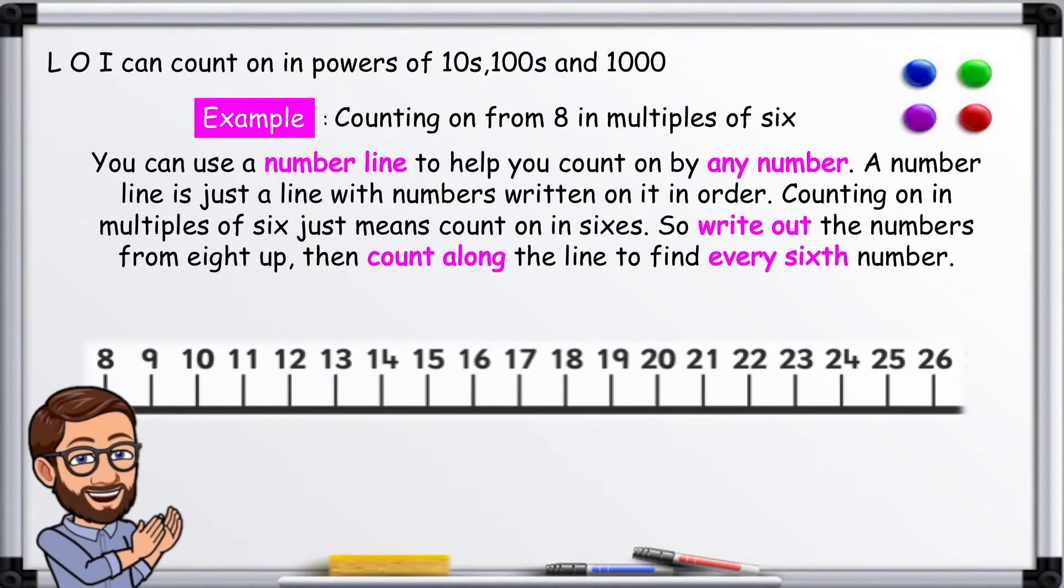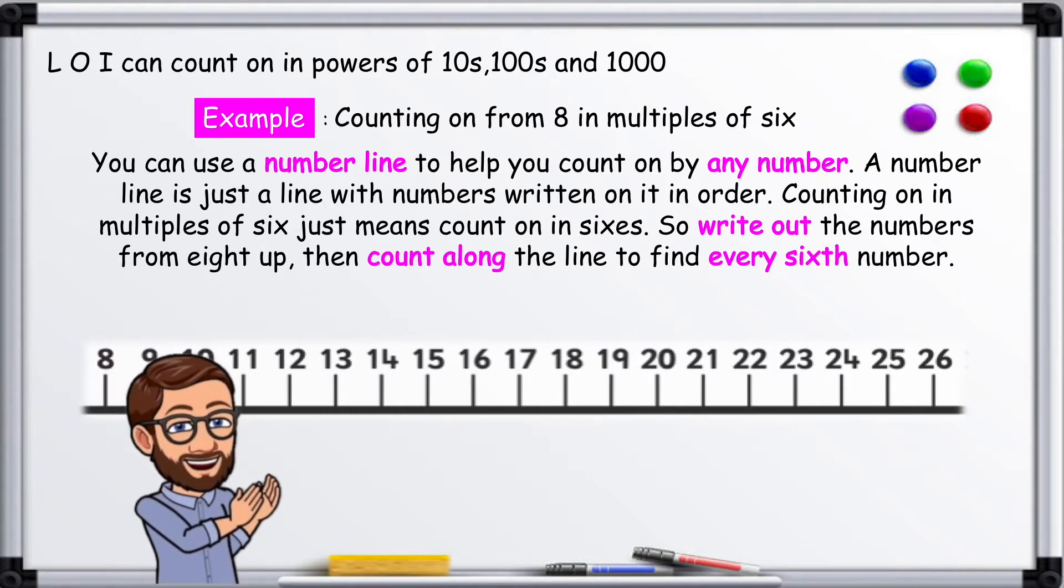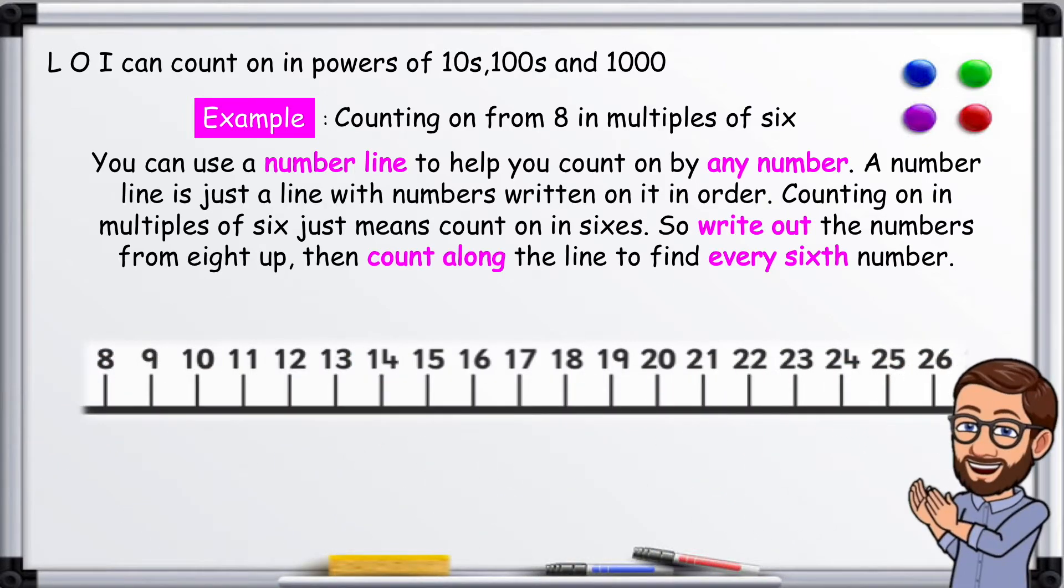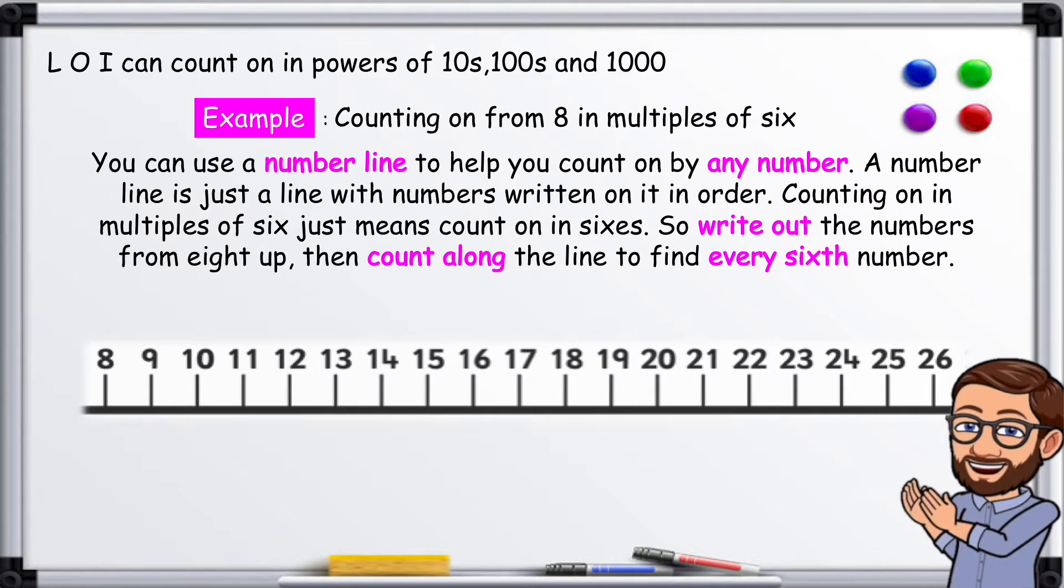Example: counting on from 8 in multiples of 6. You can use a number line to help you count on by any number. A number line is just a line with numbers written on it in order. Counting on in multiples of 6 just means count in 6s.